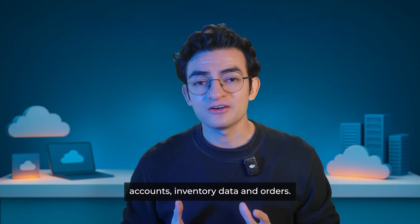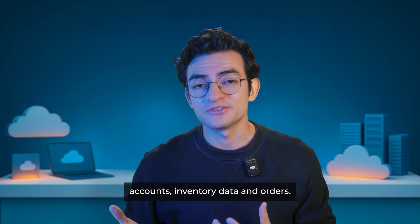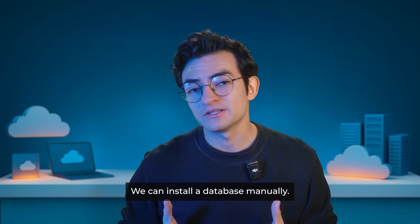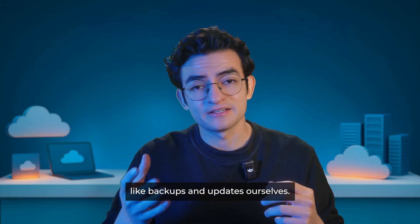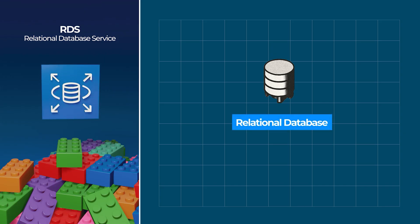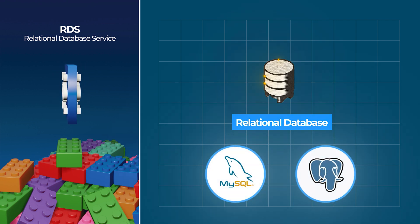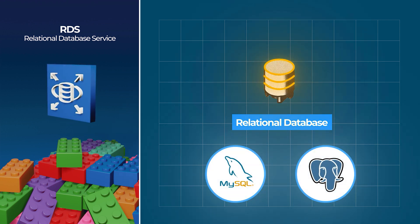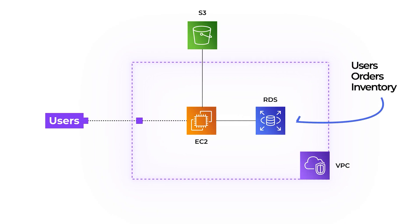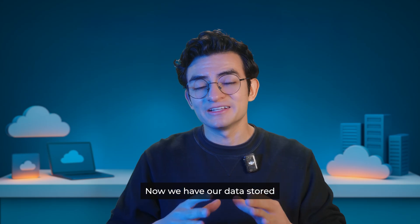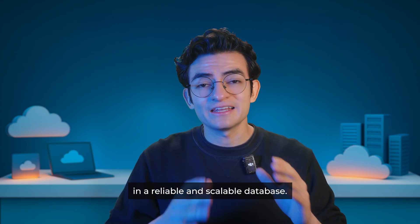Then we need to save customer accounts, inventory data, and orders. We could install a database manually, but that means handling stuff like backups and updates ourselves. RDS is the service that provides you a relational database, like MySQL or Postgres, configured and maintained automatically by AWS. We will create a MySQL database using RDS to store and keep track of things like users, orders, and inventory. Now we have our data stored in a reliable and scalable database.